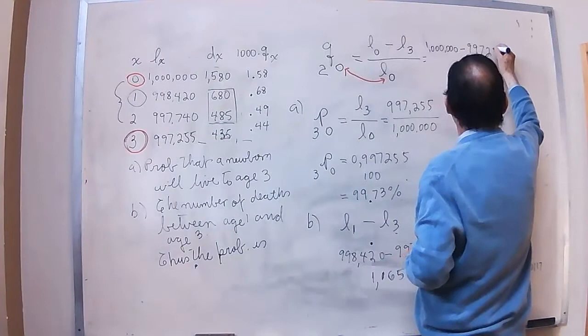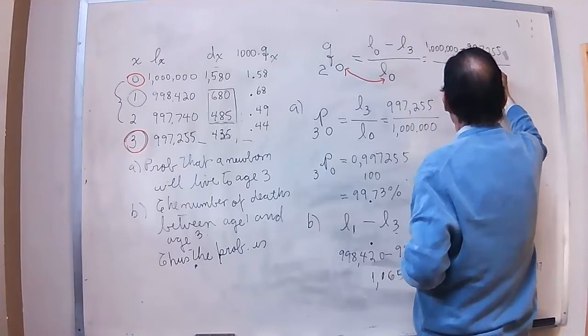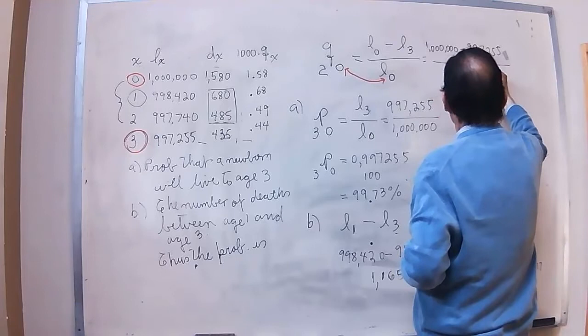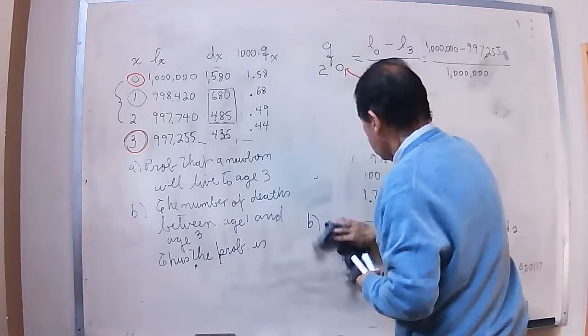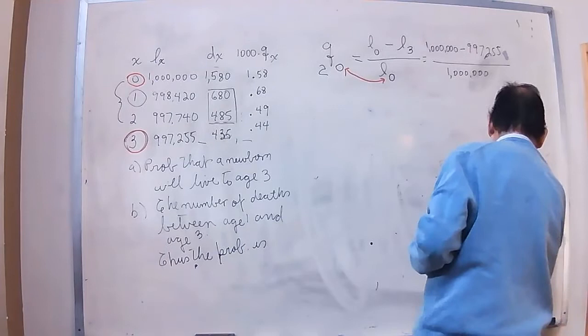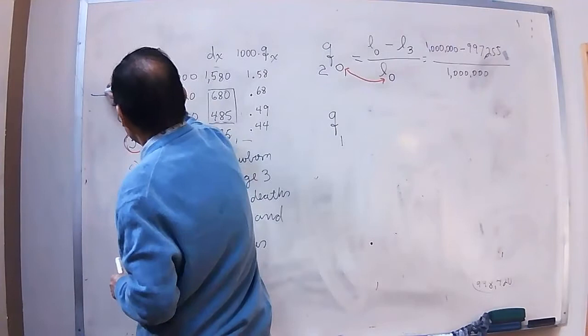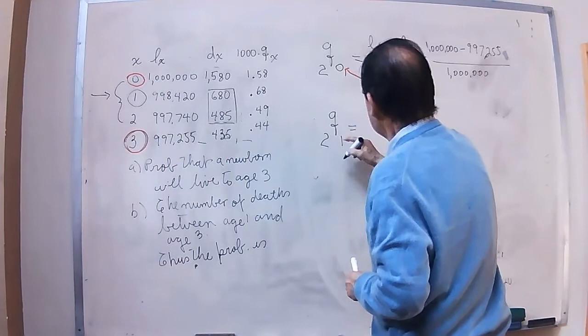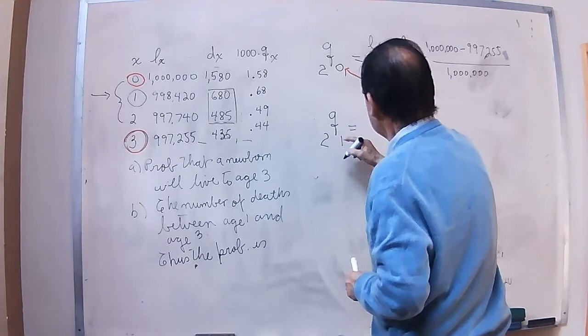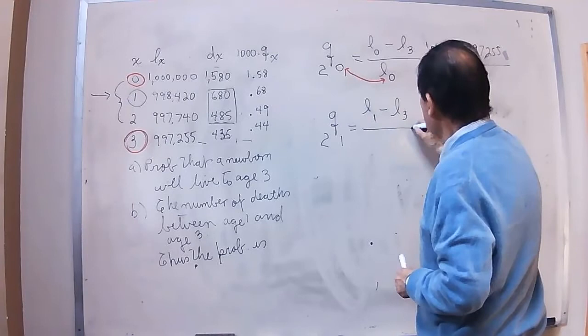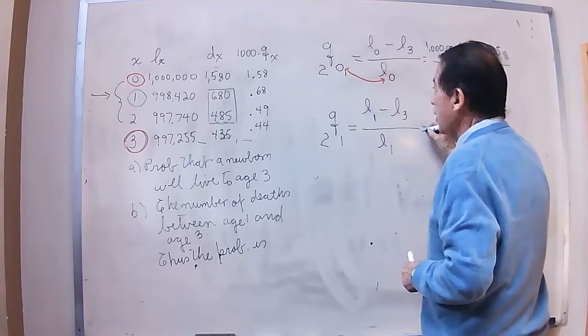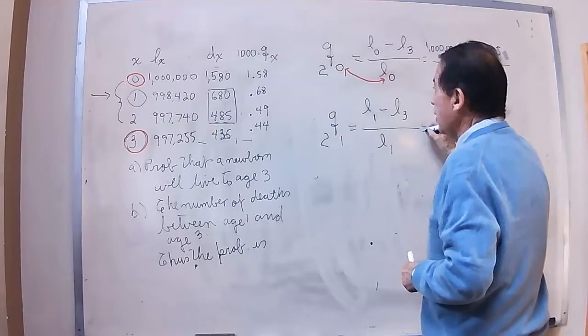So therefore, I am considering people which will be a million persons at age zero, and at age three, not considering 997,255. So if we look for the probability, this is one probability. But the next one will be another probability, which we can also argue in this case. If we consider age 1, if at age one, which will be number one, in the next two years, will be people which are living at age one, but they are not living at age three. At age one, we have 998,420 persons.